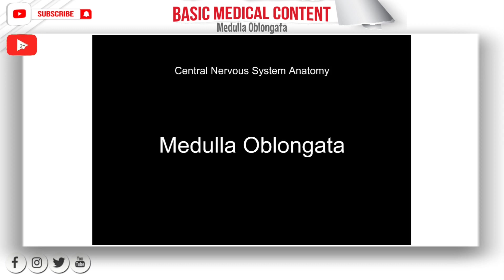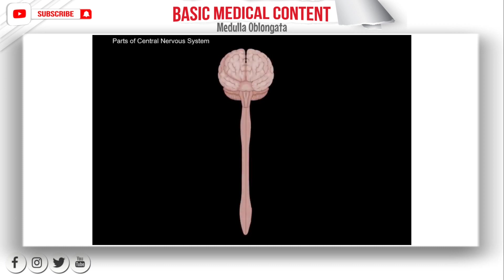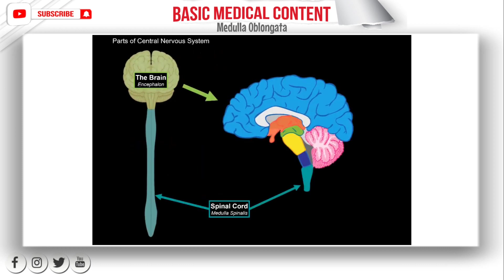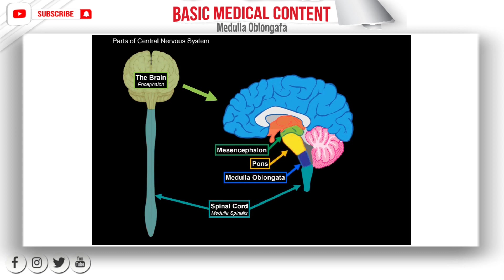Let's continue the anatomy of the central nervous system. In this segment, we will cover the complete anatomy of the medulla oblongata. The central nervous system consists of two parts: the encephalon and the spinal cord. The encephalon is further subdivided into specific parts. We have the brainstem, which consists of the medulla, pons, and the midbrain, or the mesencephalon.